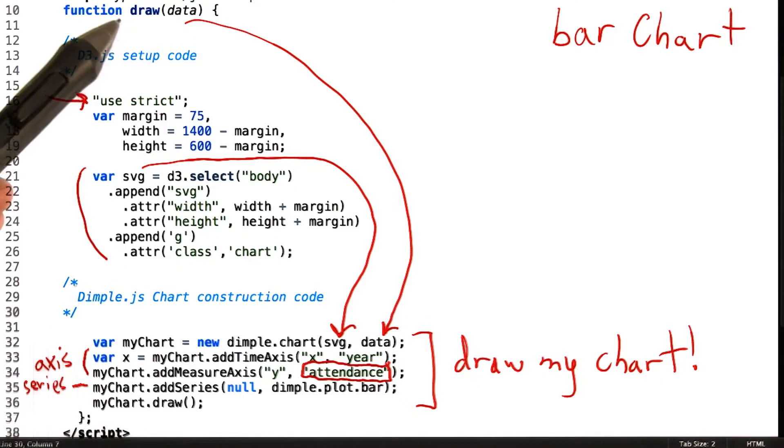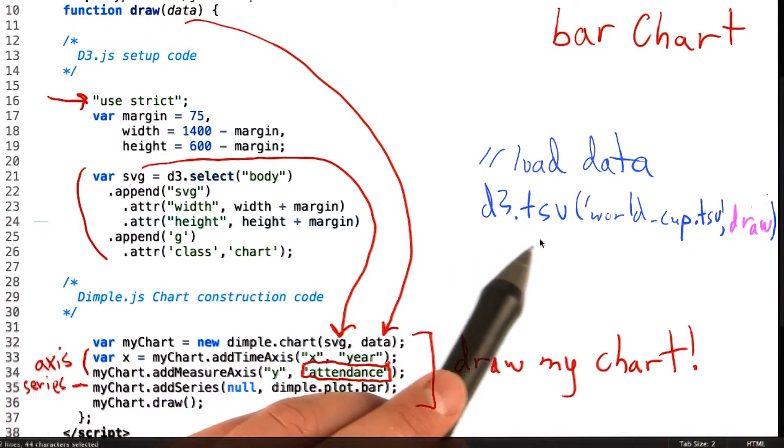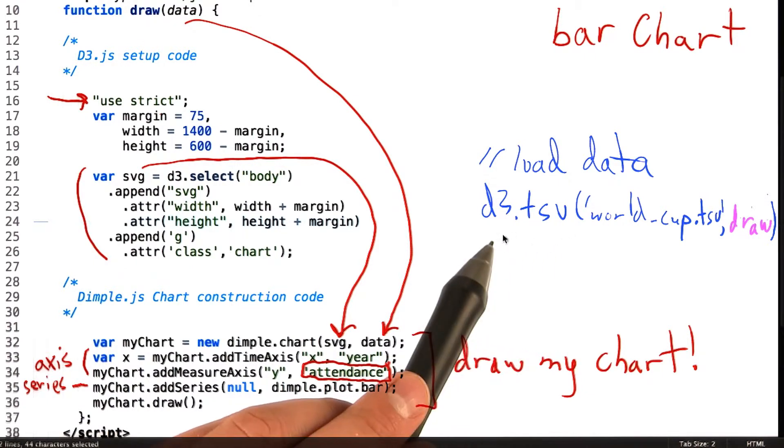That gets passed to the draw function callback from our data loading function. The data loading function is D3's tsv function, which loads a tab-separated value file.